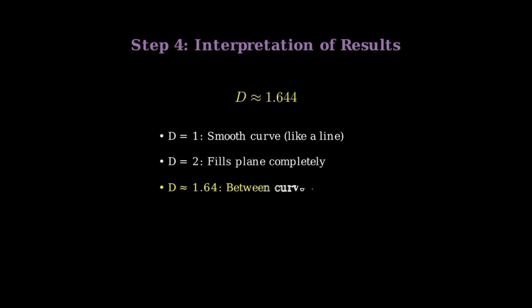What does this dimension mean? A smooth curve has dimension 1. A surface that completely fills a plane has dimension 2. Our Weierstrass function, with dimension approximately 1.64, is rougher than any smooth curve, yet doesn't fill the entire plane. It represents something fundamentally between a curve and a surface.